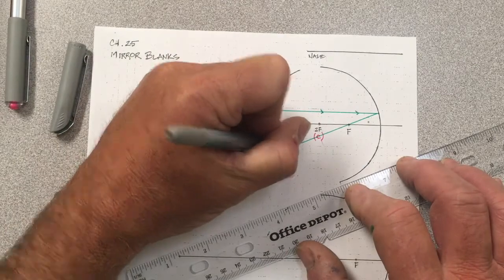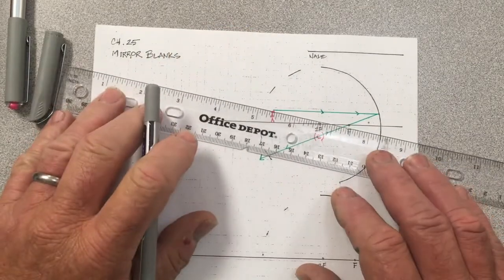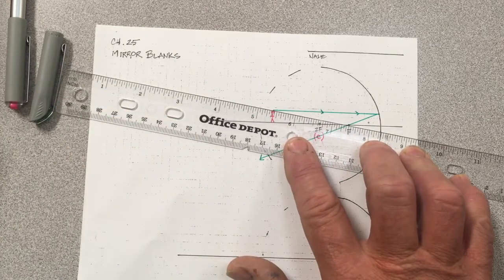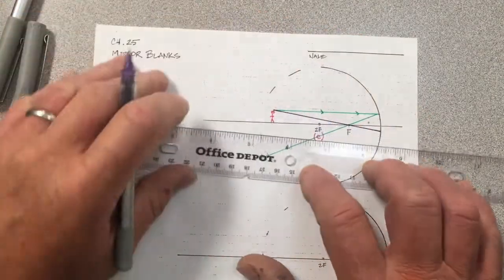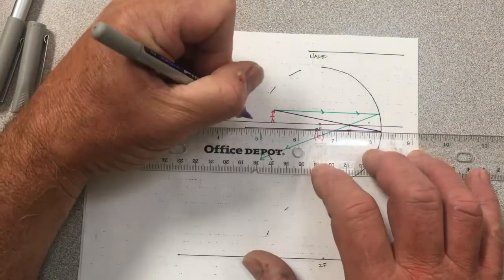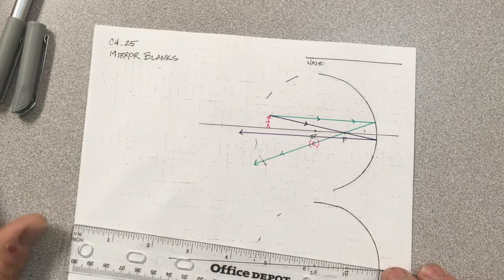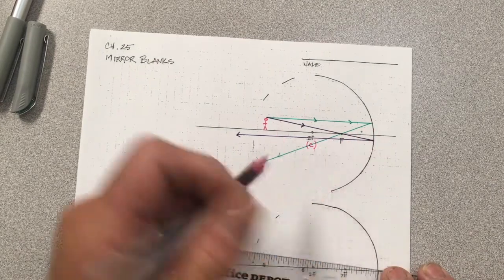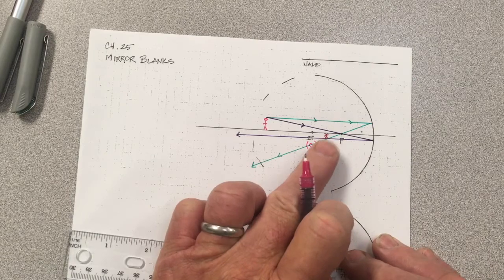The second ray goes through, again typically goes through F on the way to the mirrored surface. Such a ray of course will reflect parallel to the principal axis. The intersection of these two rays after the rays strike the mirror and reflect, converge after striking the mirror, is where the image is formed.